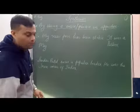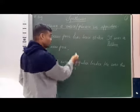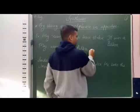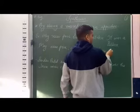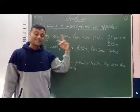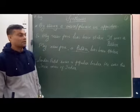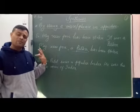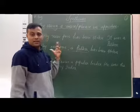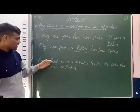My new pen — my new pen, a Parker, has been stolen. See, we have combined two sentences by using a noun phrase in apposition. 'My new pen' is a noun and the information about the noun is given in the second sentence — 'a Parker.' That information we write side by side — that is called apposition.